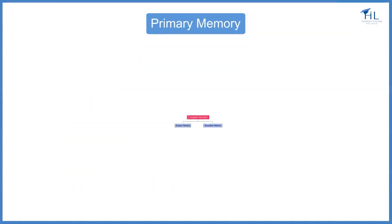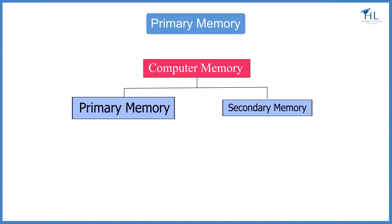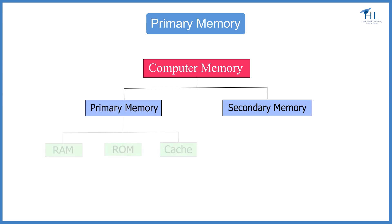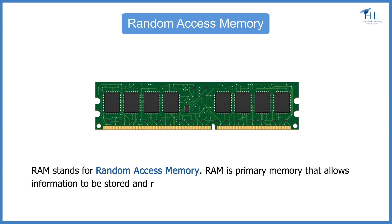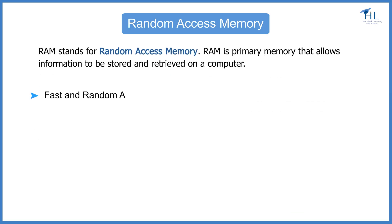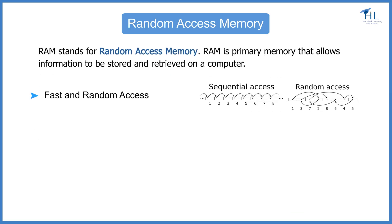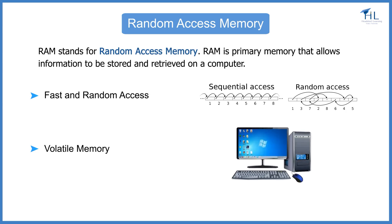Let us learn about primary memory now. Primary memory is of the following types: RAM, ROM, and cache memory. RAM stands for Random Access Memory. RAM is primary memory that allows information to be stored and retrieved on a computer. Accessing data from RAM is very fast, and the data is accessed randomly instead of sequentially, like it is on a CD or hard drive. RAM is volatile memory and requires power to keep the data accessible. If the computer is turned off, all the data contained in RAM is lost.